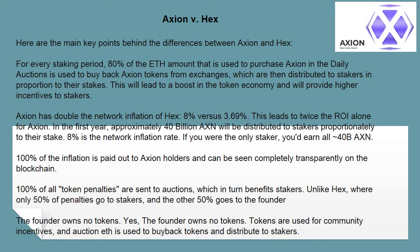Axion has double the network inflation of HEX, leading to twice the ROI alone. In the first year, approximately 40 billion AXN will be distributed to stakers proportionately to their stake. The 8% network inflation rate means that if you were the only staker, you'd earn all 40 billion AXN.